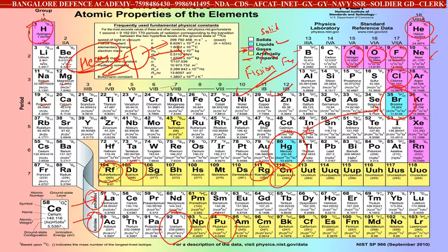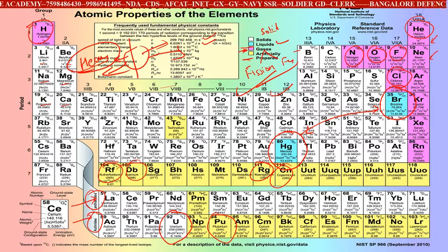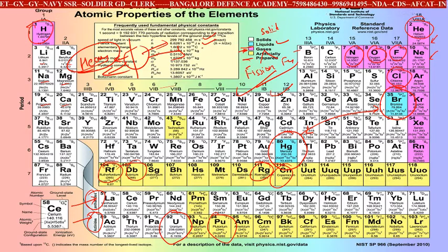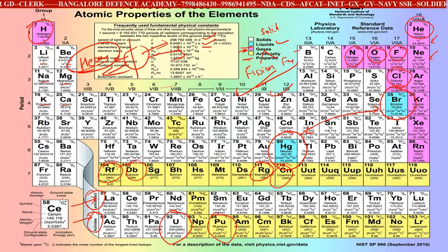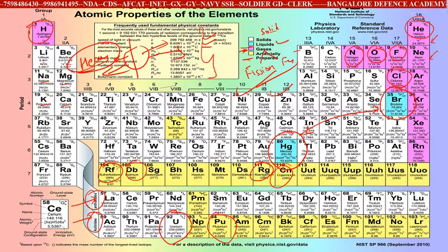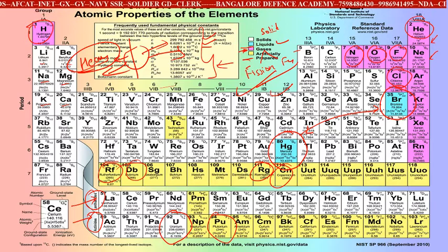There are important constants here: the speed of light, the Planck's constant at 6.6261 × 10⁻³⁴ J·s, the elementary electrical charge at 1.6 × 10⁻¹⁹, the electron mass, and the Boltzmann constant. These constants are used in chemistry to find answers in mathematical calculations.